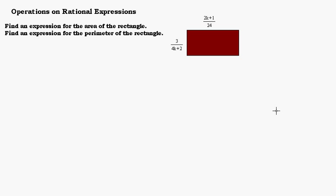In this video, we're going to look at an example involving a rectangle that's going to give us an opportunity to practice operations on rational expressions. The first thing we want to do is find an expression for the area of the rectangle, and the next thing we're going to do is find an expression for the perimeter. Here's our rectangle, and we know that the length is 2k plus 1 over 24, and the width is 3 over 4k plus 2. So let's start with the area.